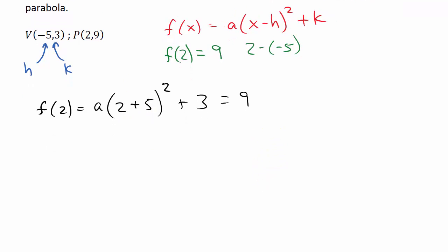So now, if you look at this, I have a nice little equation to solve. Okay. So here I have 2 plus 5 is 7. And then 7 squared is 49. So I've got 49a plus 3 equals 9. Okay. And then I solve for a. So I subtract 3 from both sides. That's 49a equals 6. Divide both sides by 49. I get a is 6 over 49. So that's a.